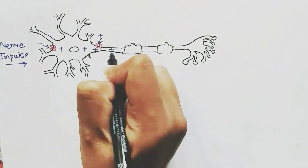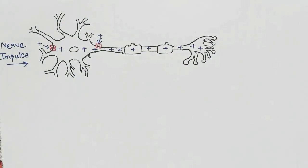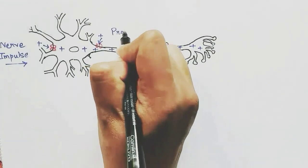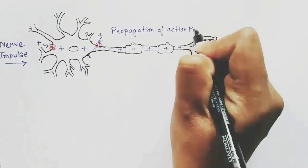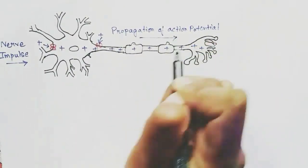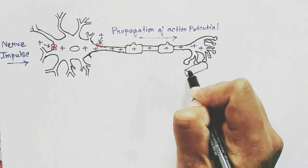This makes the cell positive rather than negative, which it was previously. This change is called action potential. The action potential propagates through the neuron axon and reaches the terminal.